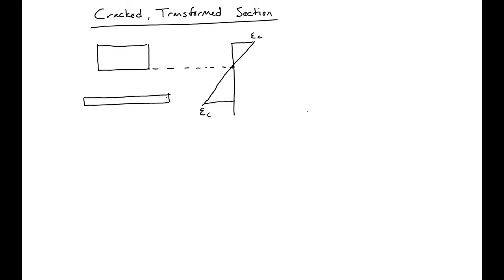So what we'll have is this height, we'll now call KD, the width is B, the distance from the neutral axis to the center of the steel we'll call D minus KD. And we'll have the area of our concrete and our transformed steel area, which is now N times A_s, the area of steel.